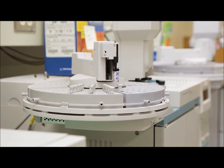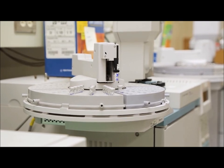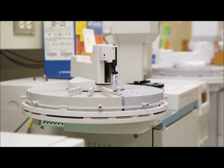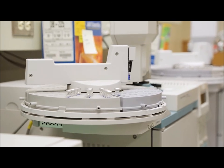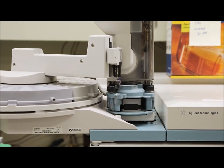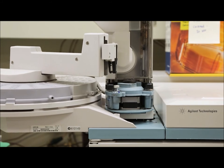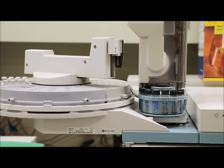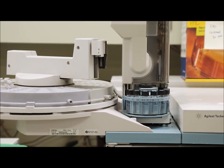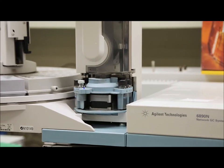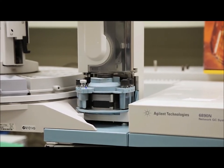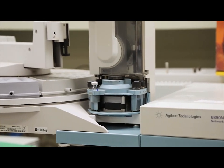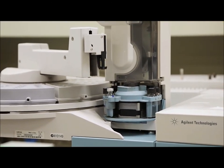The vials are placed onto the auto sampler tray of the GC. Everything is set up through the Empower software, so samples are injected through the software. The parameters of the Empower software, we follow the operating conditions for the GC as listed in the AOCS CE 1I 07 method.